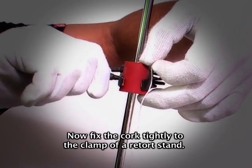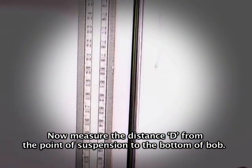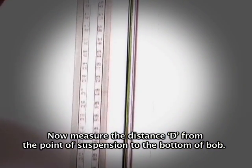Now fix the cork tightly to the clamp of a retort stand. Now measure the distance from the point of suspension to the bottom of the bob.